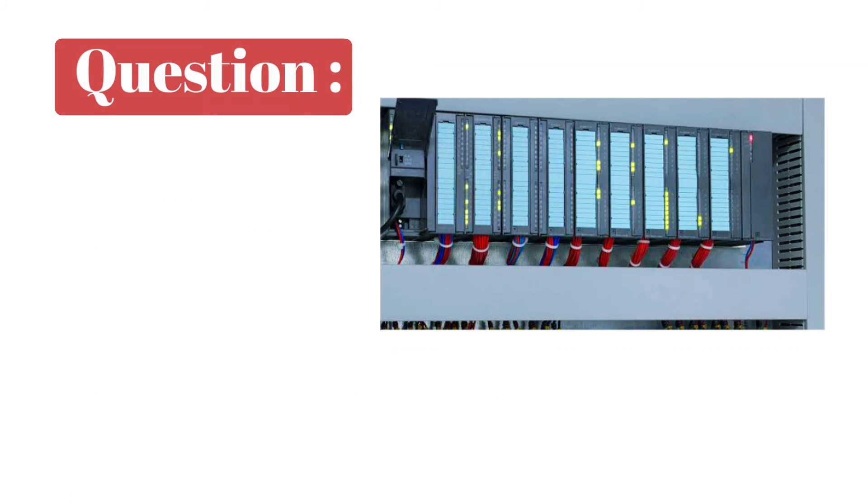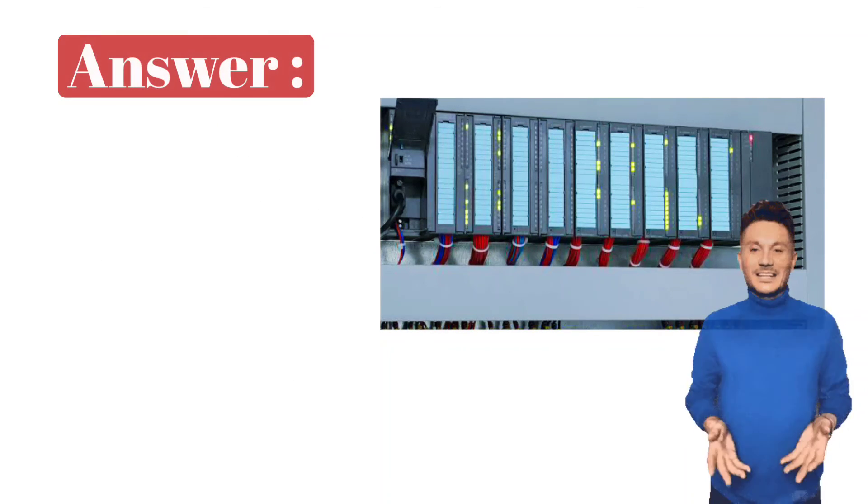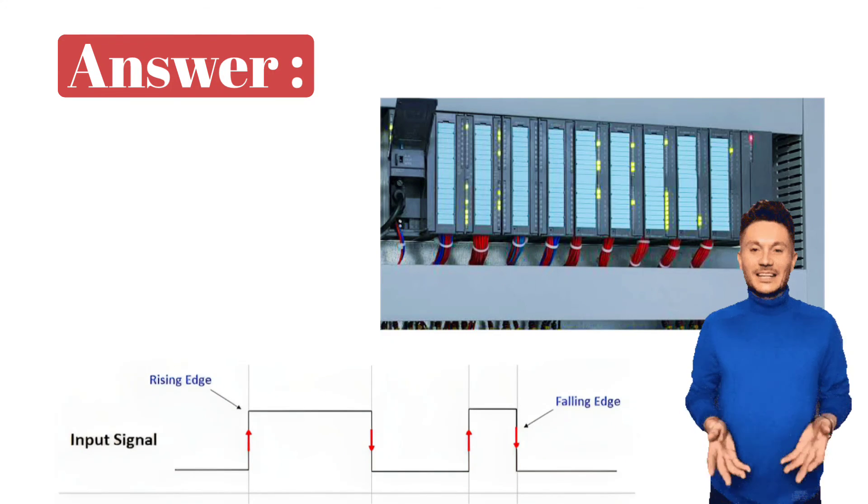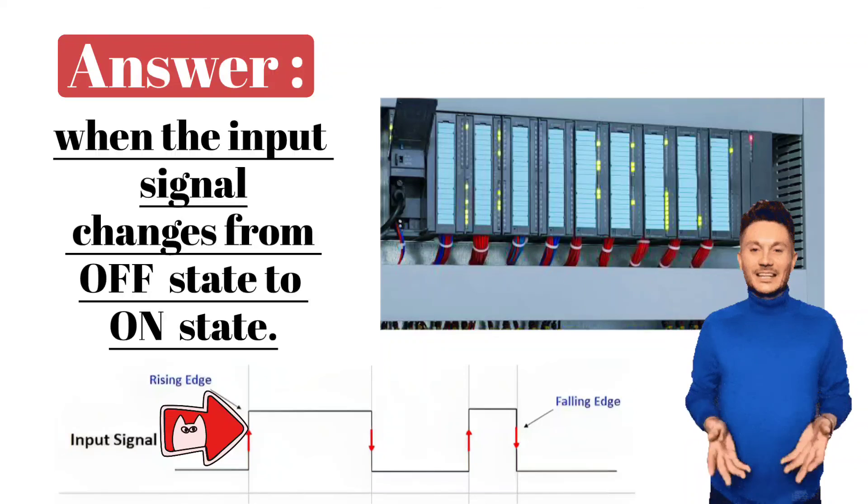Question is, what are rising edge and falling edge in PLC programming? Answer is, rising edge in PLC programming means when the input signal changes from OFF LOW state to ON HIGH state.